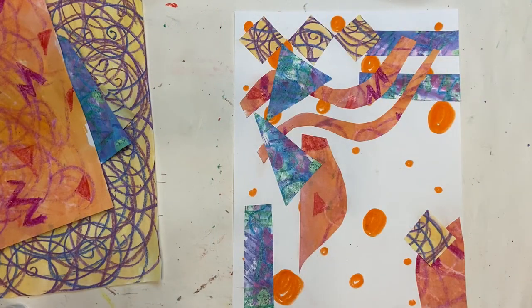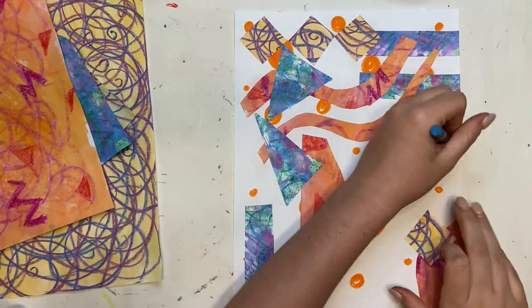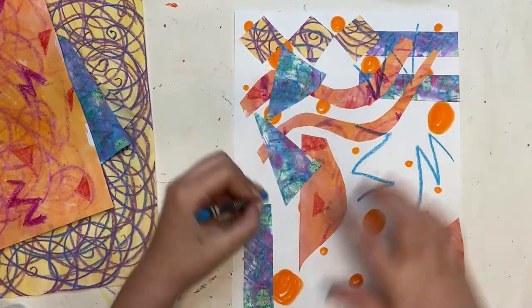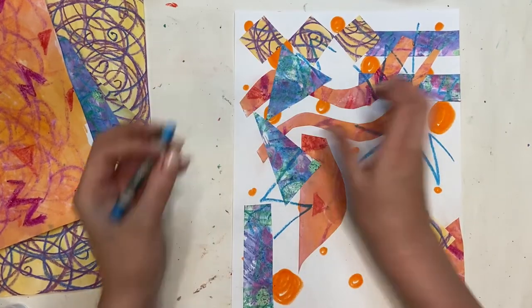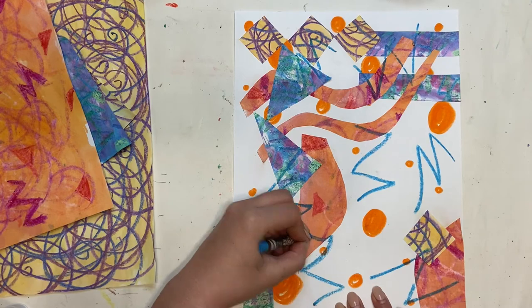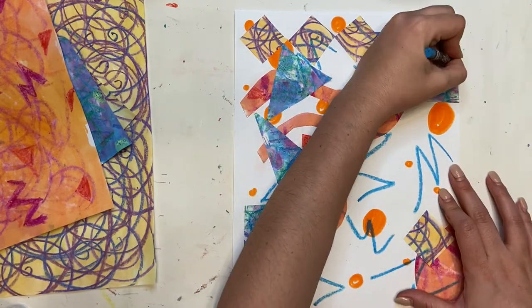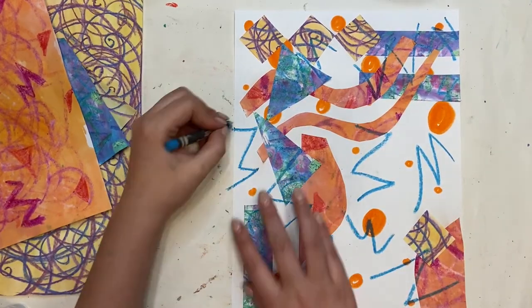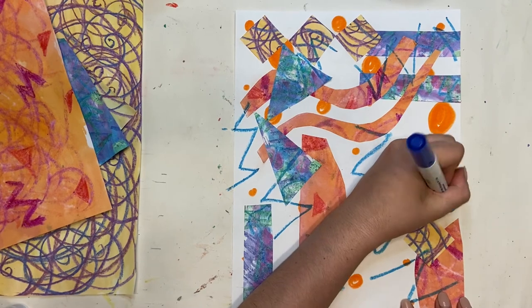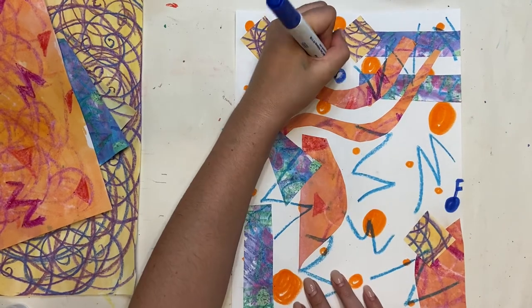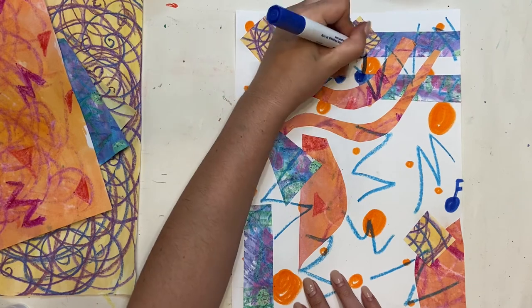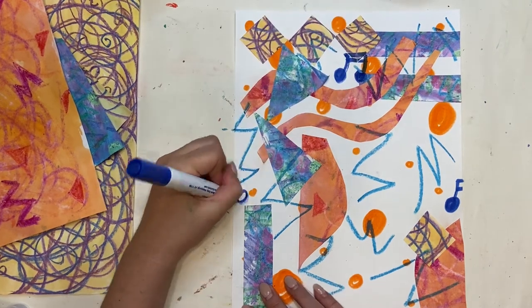Now that all my paper is glued down, I'm just gonna add more details because I still see a lot of white and I don't want to see as much white. So I'm gonna add crayons. I also have my stickers that I can use for sure. These are music notes, which I'm adding. Music notes are used when you want to play music, like if you're gonna play your guitar or if you're singing.